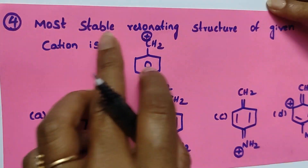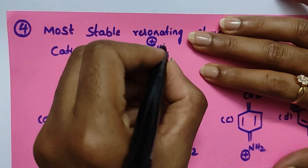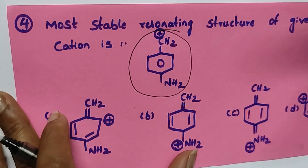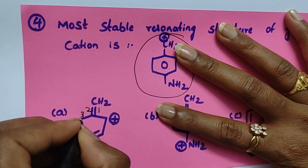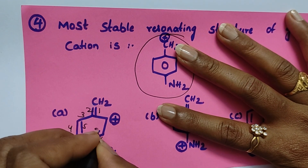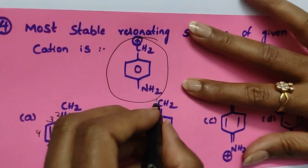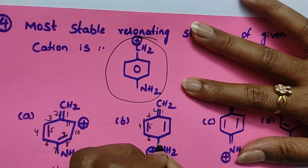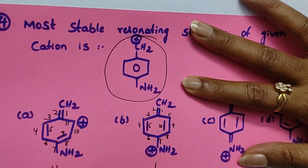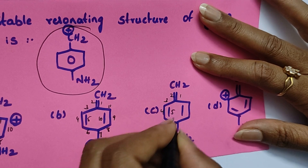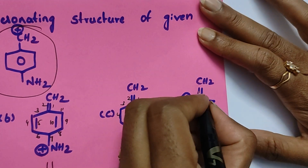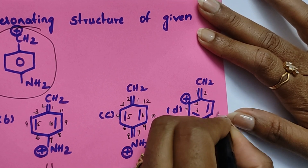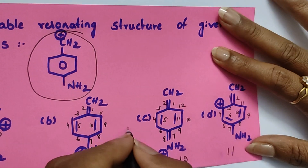Question number four: most stable resonating structure of the given cation. Counting bonds in each structure. Three of them have eleven covalent bonds each. Option C has twelve covalent bonds — one, two, three, four, five, six, seven, eight, nine, ten, eleven, twelve. Since twelve is the most, option C is the correct answer.